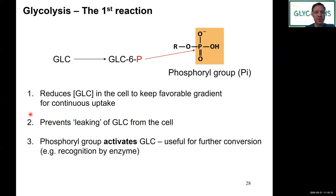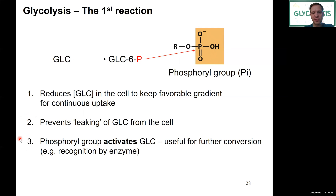Secondly, by converting glucose to a phosphorylated compound, we can prevent glucose from leaking from the cell. Phosphorylating a compound will increase its polarity and thereby reduce its potential to passively go across a membrane, so we can trap it within the cell, making sure that it's used for glycolysis. And thirdly, attaching this phosphoryl group activates glucose. You will see that it's a very good leaving group and is providing additional energy for further conversion of glucose throughout glycolysis.